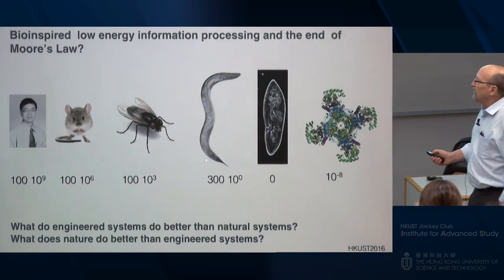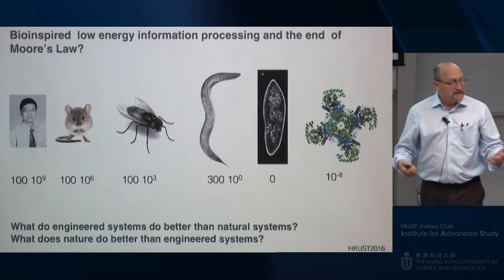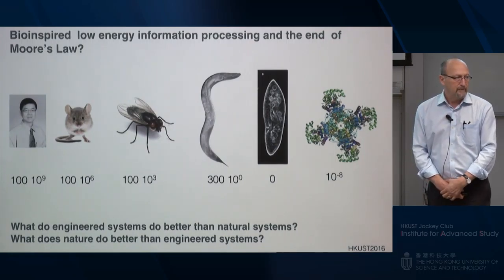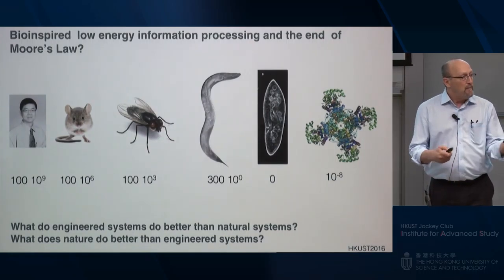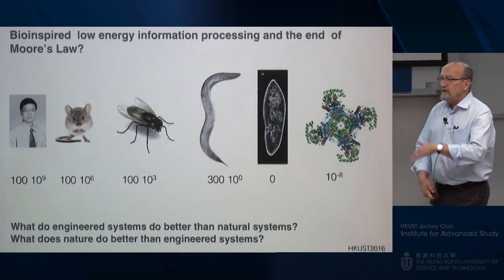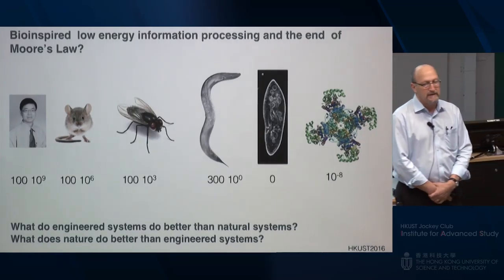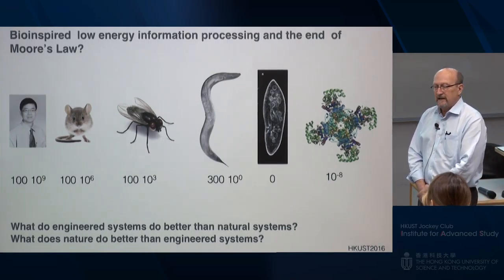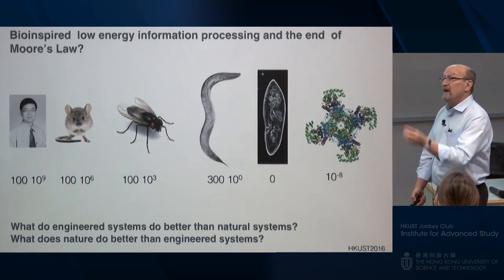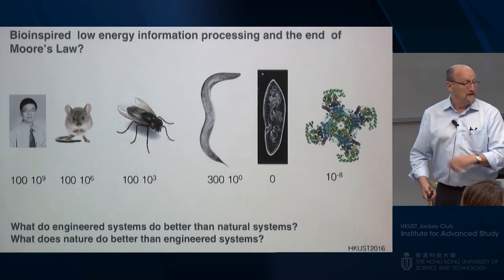The nematode C. elegans has exactly 302 neurons, yet exhibits more behavior than we can compute through simple modeling of its neural systems. After decades of study, every neuron has been identified, all connections are known, many properties are known — and still our computers can't fully understand the computations they perform. As one key investigator put it: 'We only have ourselves to blame. This is a hard problem.'